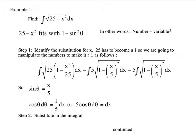When trying to figure out what trig identity to use, look under the radical. A number minus a variable squared will fit with one minus sine squared — except instead of a one we have 25. So our first step is to identify the substitution for x. The 25 has to become a one, so we're going to manipulate the numbers to make it a one.